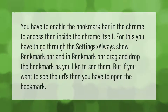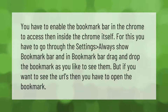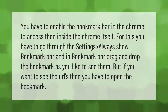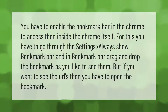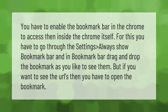You have to enable the bookmark bar in Chrome to access it. Go through the Settings, select 'Always show bookmark bar,' and in the bookmark bar drag and drop the bookmarks as you like to see them. If you want to see the URLs, you have to open the bookmark manager.